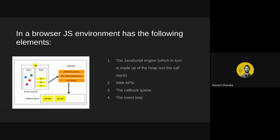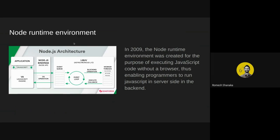At the heart of any JavaScript runtime is always a JavaScript engine. There are two mostly used JavaScript runtime environments: the browser environment and the Node environment. In a browser JavaScript environment it has the JavaScript engine, Web APIs, the callback queue, and the event loop. The Node runtime environment was created in 2009 for the purpose of executing JavaScript code without a browser, enabling programmers to run JavaScript server-side in the backend.